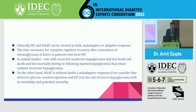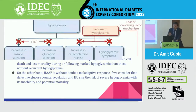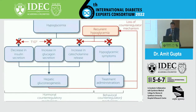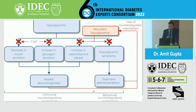However, hypoglycemia-associated autonomic failure — the failure of counter-regulatory hormones to act — is without doubt a maladaptive response. Defective glucose counter-regulation and HU increase the risk of severe hypoglycemia with increased morbidity and mortality. When hypoglycemia occurs, the first step is decreased insulin secretion, which is compromised in type 1 and type 2 diabetes. The second response is increased glucagon secretion, again impaired in type 2 diabetes. Third, increased catecholamine release produces hypoglycemic symptoms. With recurrent hypoglycemia, all these steps are compromised, leading to hypoglycemic unawareness.